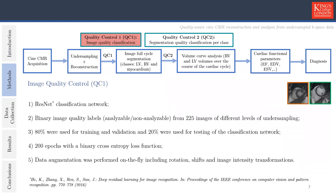We analyze the quality of each reconstructed image. This quality control step frames a binary classification problem using a ResNet classification network. An expert cardiologist generated binary image quality labels from 225 images of different levels of undersampling. 80% were used for training and validation of the classification network, and 20% were used for testing. The ResNet network was trained for 200 epochs and the loss function was the binary cross-entropy.